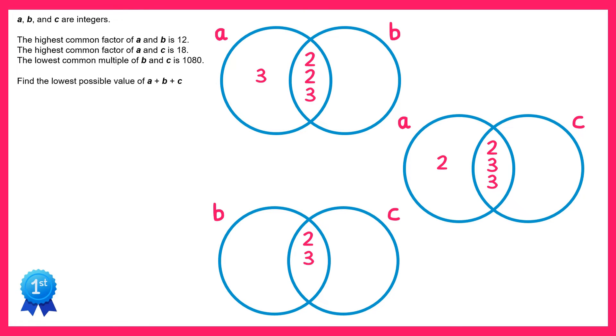Now let's look at the final statement we're given in the question. The lowest common multiple of B and C is 1080. If we prime factorise 1080, this is what we get. So all of these numbers need to appear somewhere in our final Venn diagram, the one for B and C. We've already got one 2 and one 3, so let's cross those out. And now we consider where to place the remaining numbers.